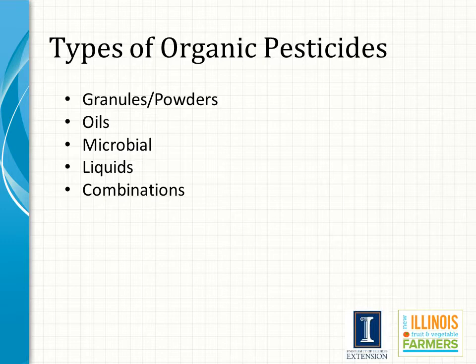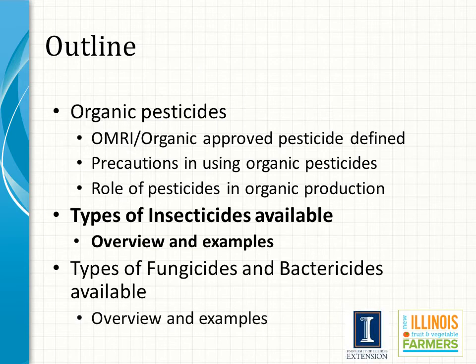Before we get into the OMRI insecticides, these are the general categories we have. These are no different than conventional pesticides in their form. Granules and powders are applied directly to the leaf tissue, the insect or pathogen, or may even be digested as a granule. Some powders may also need to be mixed with water to create a solution for application. Oils are another category derived from plant leaf tissue, such as neem oil from the neem tree. Microbial populations are those bacteria and other microbes used to address certain plant pathogens and some insects. Then liquids are the final category. There may also be some pesticides that are a combination of many of these different forms.